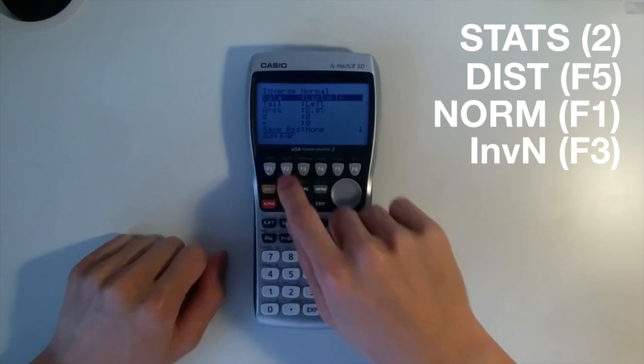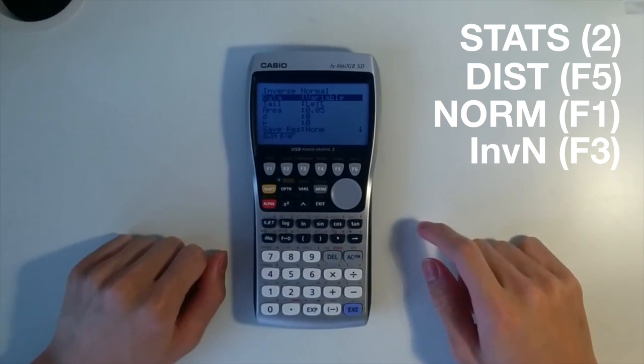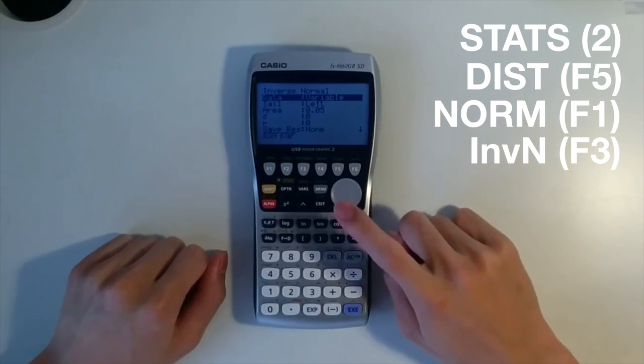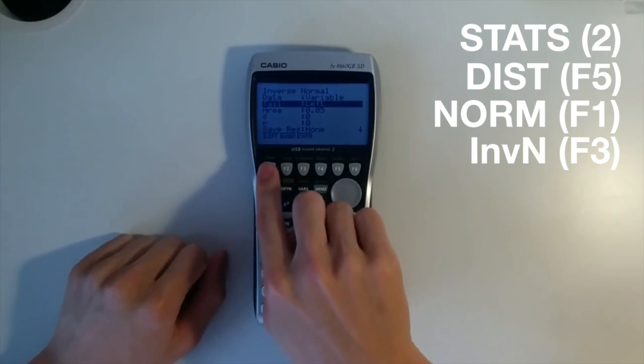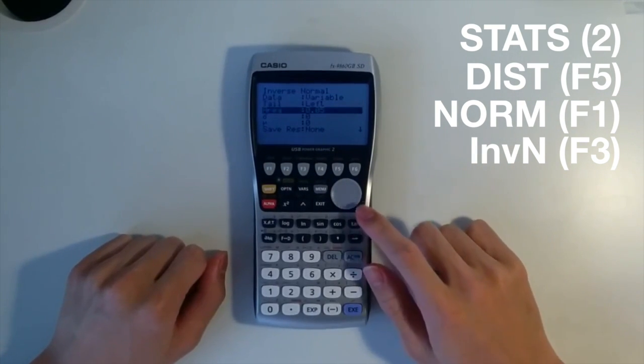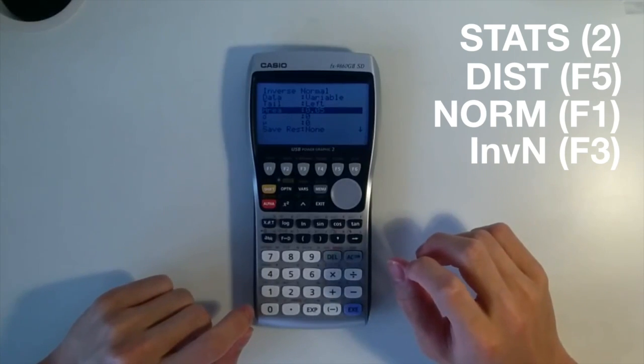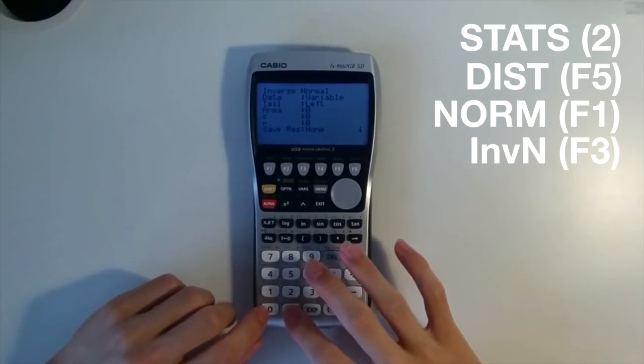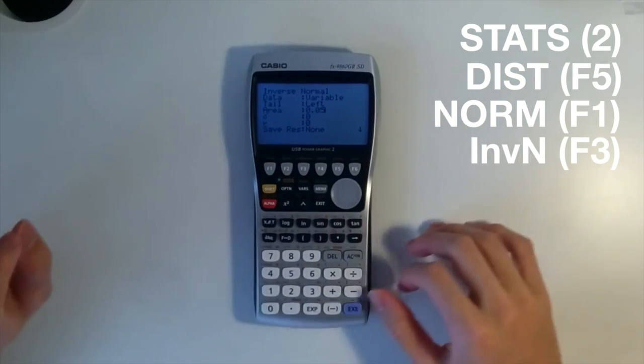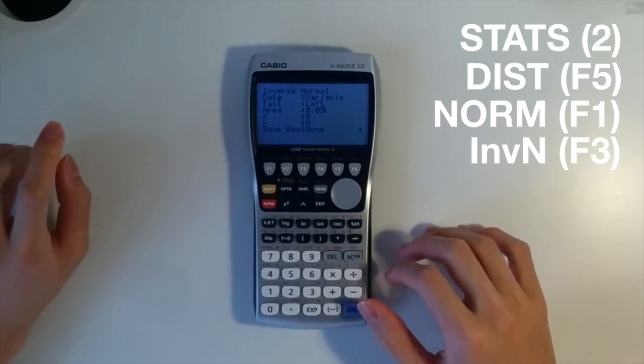For data, set it to variable because you don't have any data input into the calculator. And for the tail, set it to left because we are looking at less than instead of more than. And for area, set it to 0.05 because that is 5%.